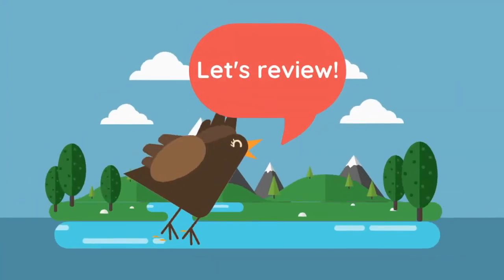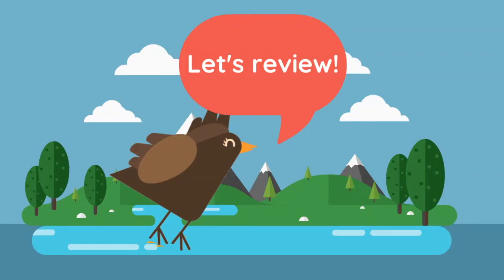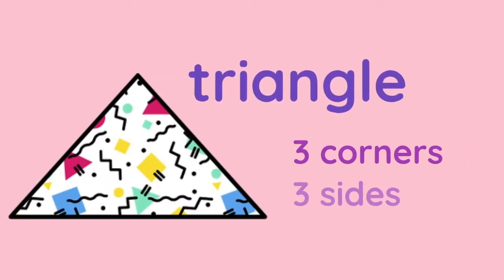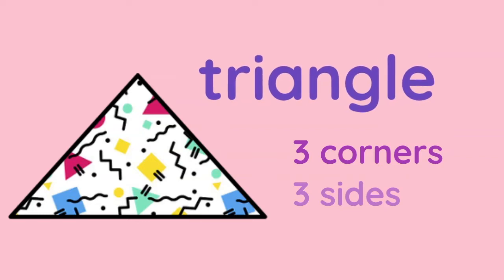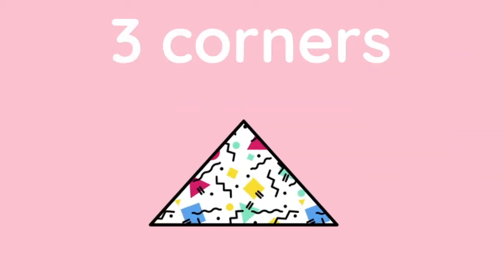Let's review. Triangle: 3 corners, 3 sides. 3 corners: 1, 2, 3.